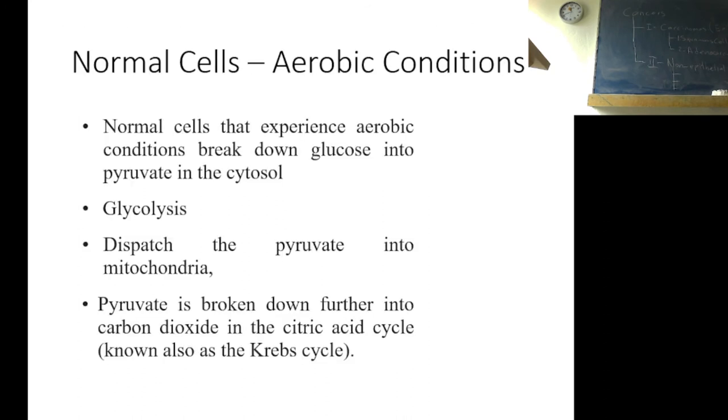Normal cells under aerobic conditions, what do normal cells do under normal conditions? Normal cells that experience aerobic conditions break down glucose into pyruvates in the cytosol, which is done by glycolytic pathway, glycolysis. And then normal cells dispatch the pyruvates into mitochondria. In the mitochondria, pyruvate is broken down further into carbon dioxide with citric acid cycle, or TCA cycle, or Krebs cycle. And then normal cells produce 36 ATPs from one glucose.